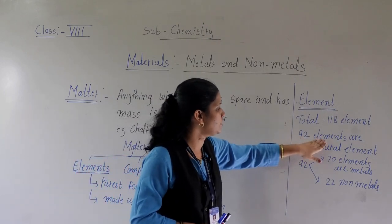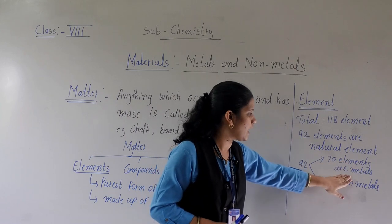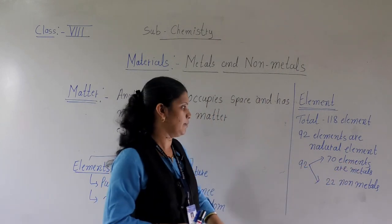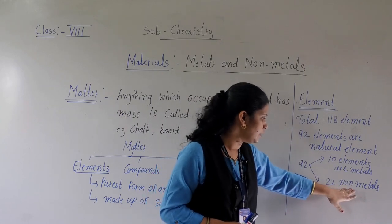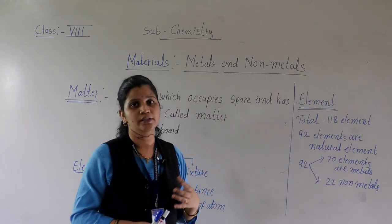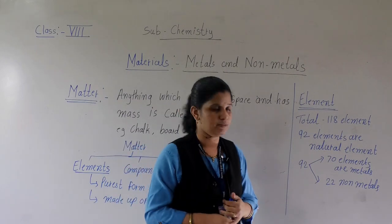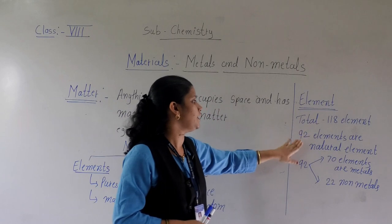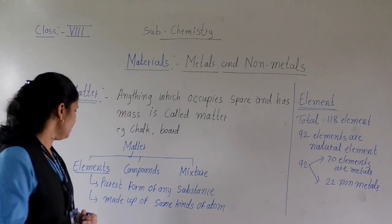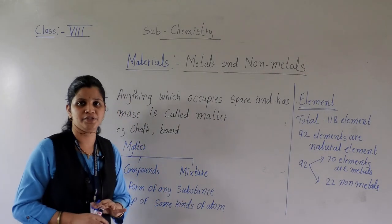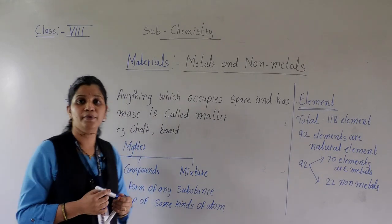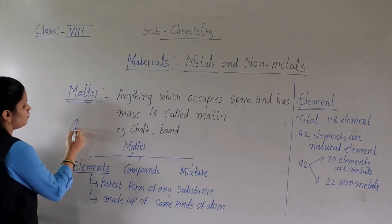Out of 92 natural elements, 70 elements are metals and 22 elements are non-metals. The remaining elements — beyond the 92 natural ones — were found by scientists through research. Now, what exactly is an element? An element is the purest form of any substance. AU — can you tell me which element that is? AU is the symbol of gold.